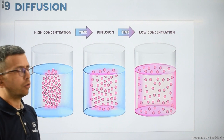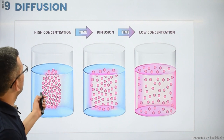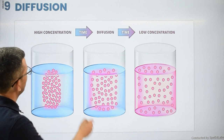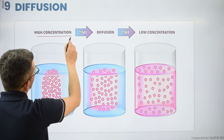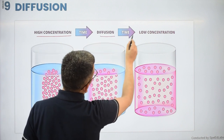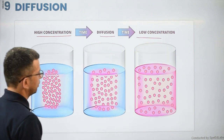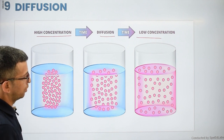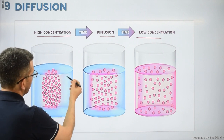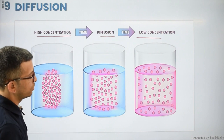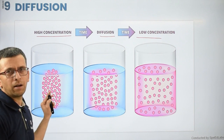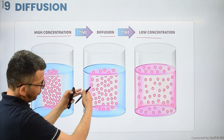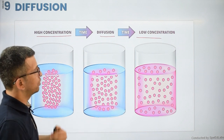This brings us to diffusion. Diffusion is when matter moves from a region of high concentration to a region of low concentration. For example, when KMnO4 is added to water, the point of addition is high concentration and the rest of the water is low concentration — the KMnO4 diffuses into the low concentration region.